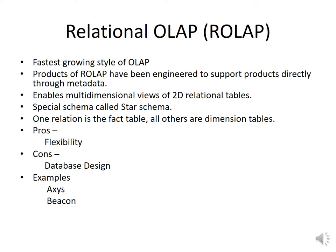Relational Online Analytical Processing, or ROLAP, is another form of OLAP which performs dynamic multidimensional analysis of data stored in a relational database rather than in a multidimensional database. ROLAP is the fastest growing style of OLAP. Its products have been engineered to support analysis directly through metadata. It enables multidimensional views of 2D relational tables and has a special schema called the star schema, where one relation is the fact table and all others are dimension tables. The pros of ROLAP include flexibility, while the cons include database design complexity. Examples of ROLAP technology include Axis and Beacon.